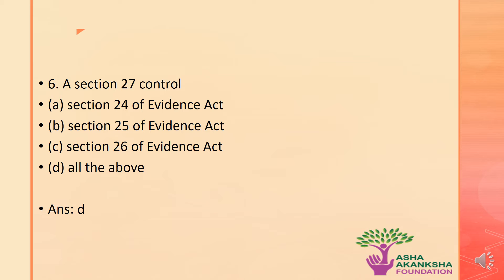The next question: Section 27 controls which of the following sections? The options are: a) Section 24, b) Section 25, c) Section 26, or d) all of the above. The correct answer is option d — all of the above are correct. Section 27 controls Sections 24, 25, and 26 of the Evidence Act.